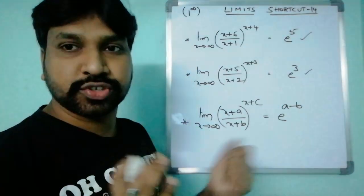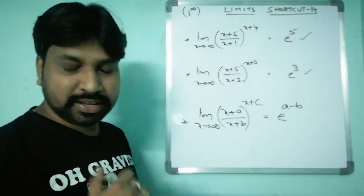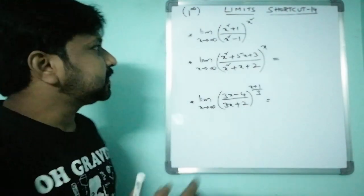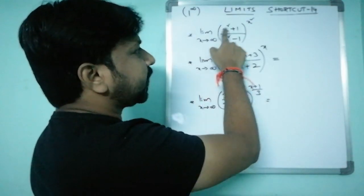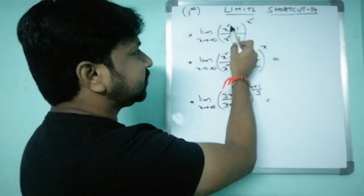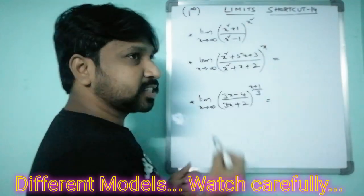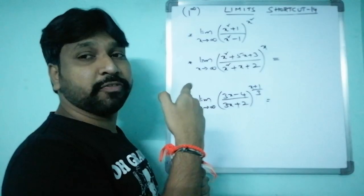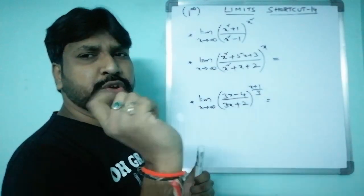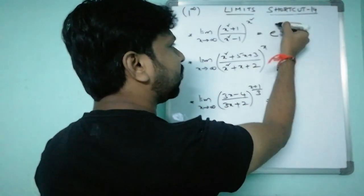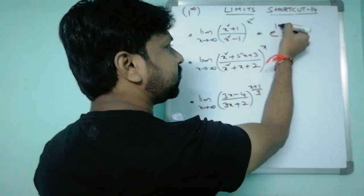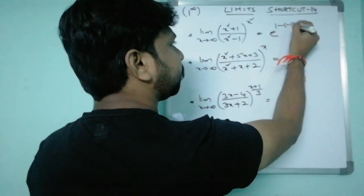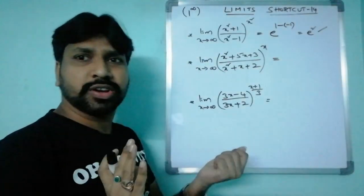Multiple examples: limit x→∞ of (x²+1)/(x²−1) whole power (x²). This is the x² combination — both base and power are x² formation. Taking x² common and cancelling gives 1^∞ form. Applying the shortcut: e to the power of (1 − (−1)) = e^2. That is your answer.